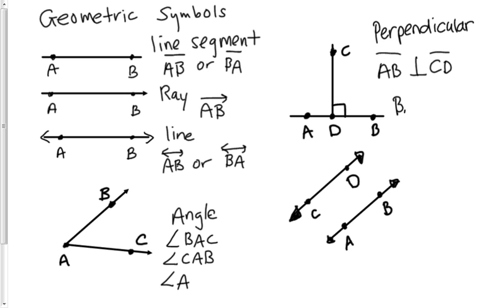So we could have also said B, A. Line segment B, A is perpendicular to DC. And there's actually some other ways we could write this.